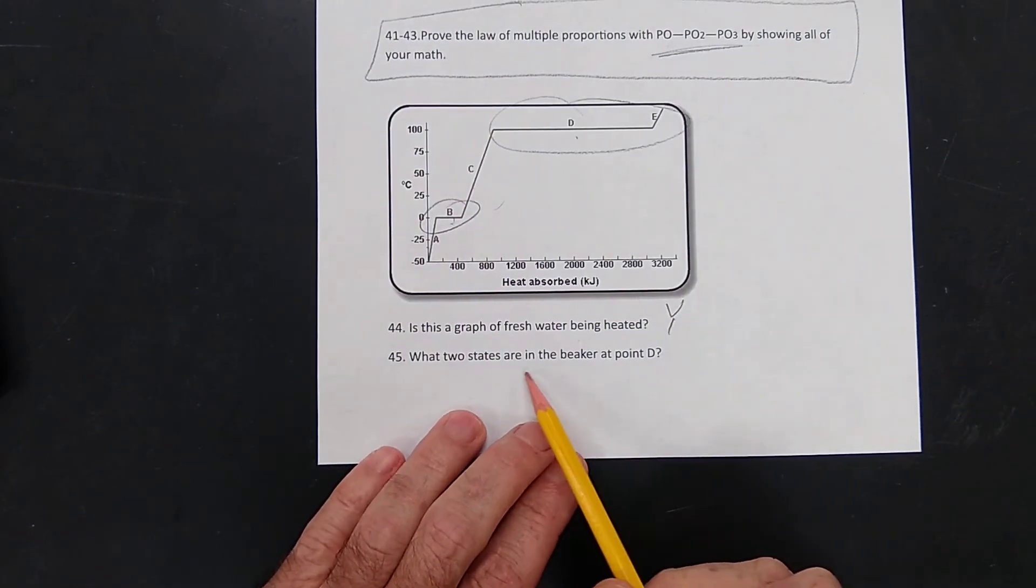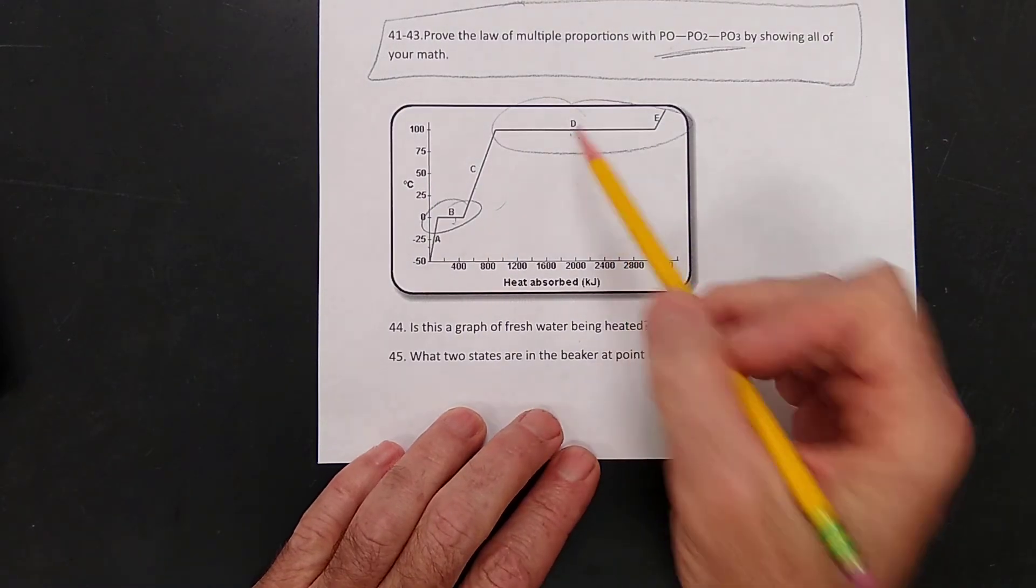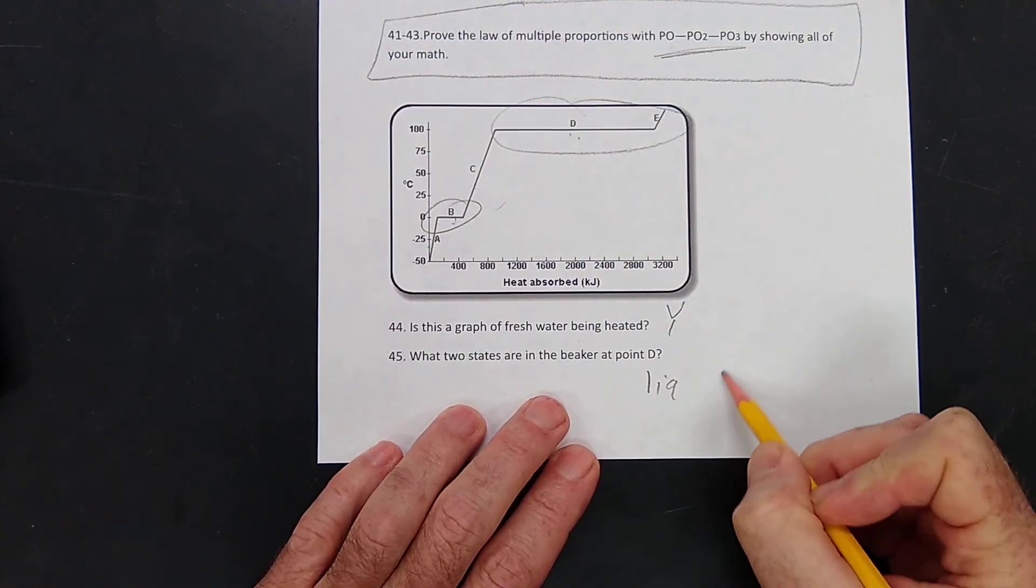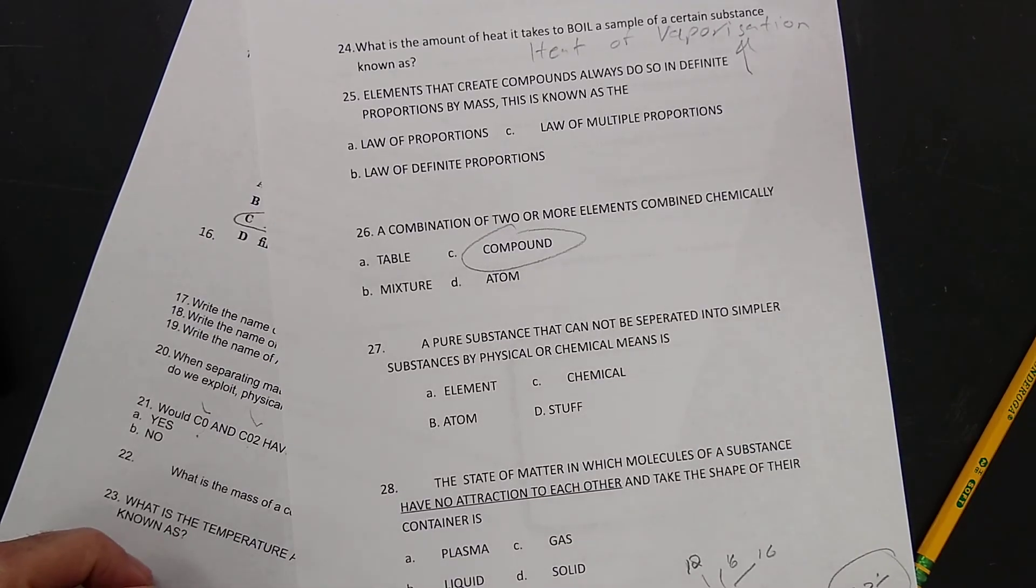Then, what two states are in the beaker at point D? Liquid and gas. All right. That's about the whole review. The rest of this stuff is obvious, I think.